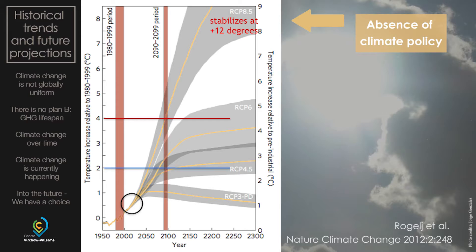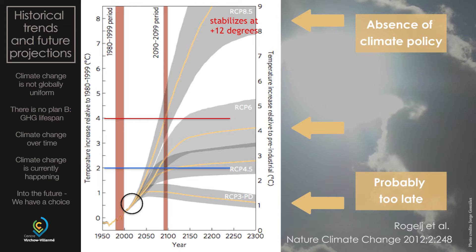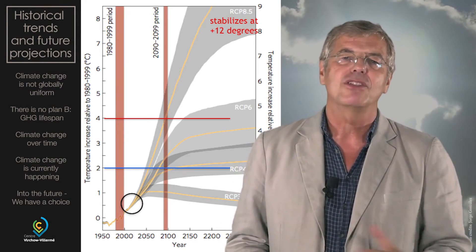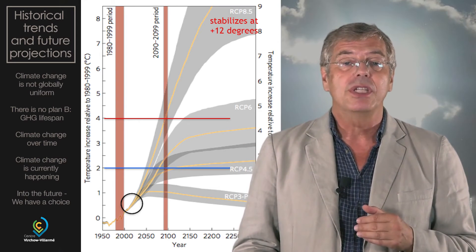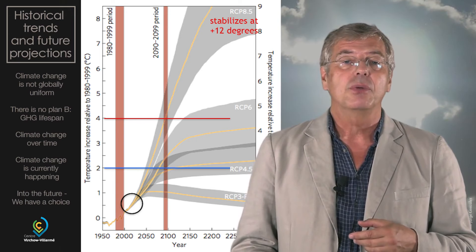The next worst climate scenario is RCP 6, which also goes beyond two degrees and reaches around four degrees by the 2300s. The only scenarios broadly within safe limits are the lower ones, and only one shows a slow decline in temperatures. Our aim must be to steer toward those lower scenarios. Unfortunately, it's probably too late for the lowest corridor, and that is in the hands of our policy makers. As health depends so much on climate, we as health professionals need to influence our climate policy makers to stay away from the four-degree trajectory.